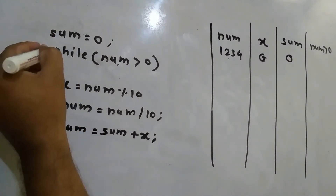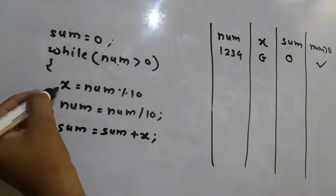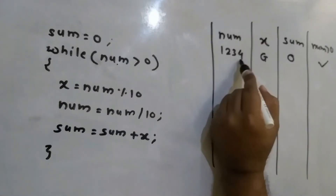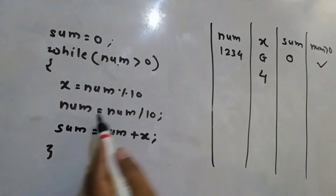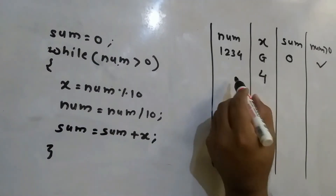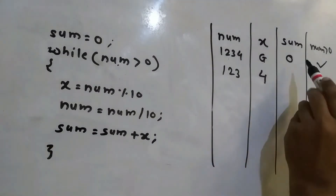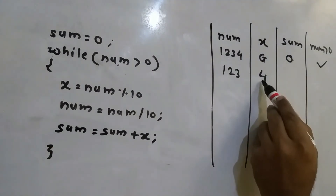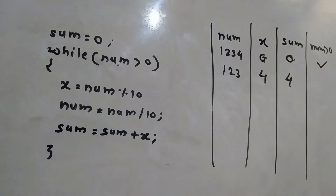In the first iteration, num is 1234 which is greater than zero, so the condition is true and we enter the loop. x equals num mod 10, so 1234 mod 10 is 4. Then num equals num divided by 10, so 1234 divided by 10 becomes 123. Then sum equals sum plus x, which is 0 plus 4. The new value of sum is 4.